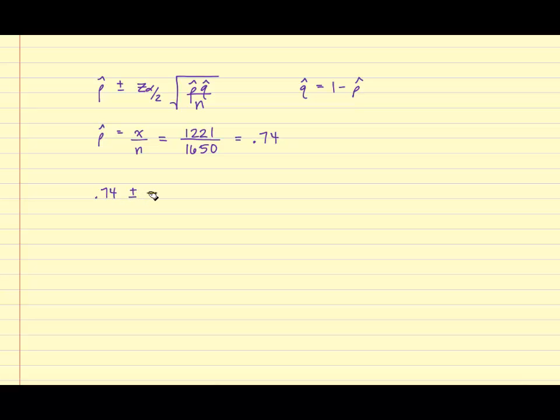Recall that the Z sub alpha over 2 that corresponds to 95% confidence is 1.96. Q hat is 1 minus p hat, so we obtain 0.26.